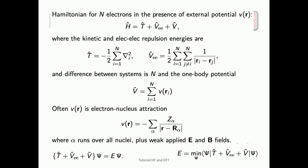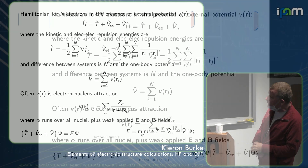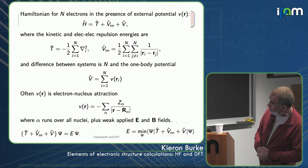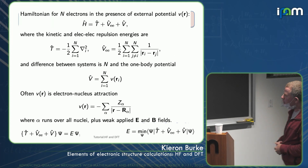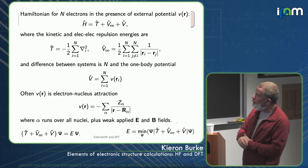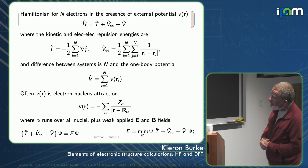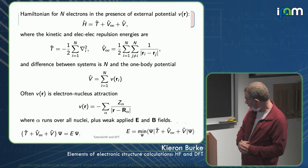In quantum mechanics, you can think of solving the Schrödinger equation, which is an eigenvalue equation: H times psi equals E times psi. Or equivalently, if you're looking for the lowest energy state, you can use the variational principle — or actually, you can use it for any stationary state — and minimize over allowed wave functions to get the ground state energy.